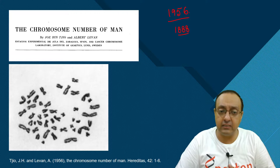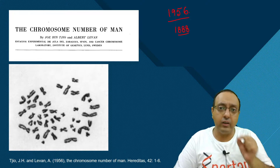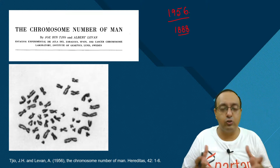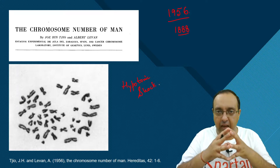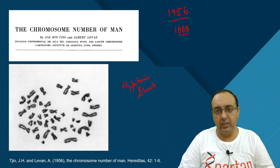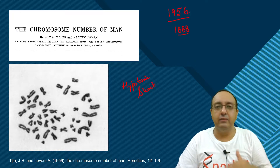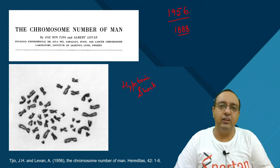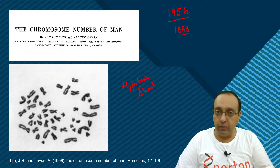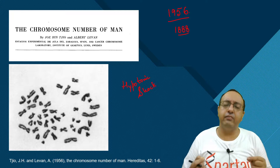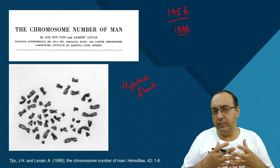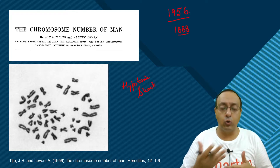This is the actual metaphase plate that they had prepared. The important development was very serendipitous: they used a hypotonic shock where they allowed the cells to swell, expand, burst, and spread their chromosomes. Previously, chromosomes in prepared samples were squished on top of each other, making it really hard to count them properly. After that, the field basically exploded, and so many diseases caused by chromosomal abnormalities were identified.